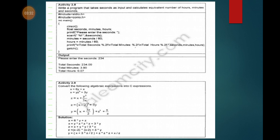Backslash n for next line. Then that statement: total hour, total minute. We have to enter the seconds. Enter 234. Total seconds 234, so this is 0.07.